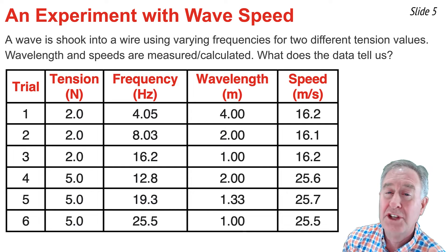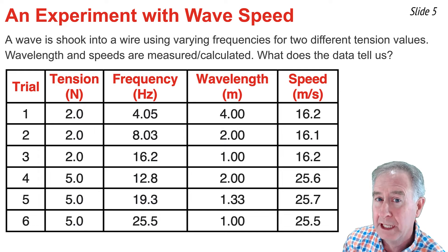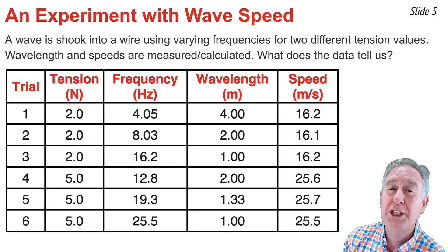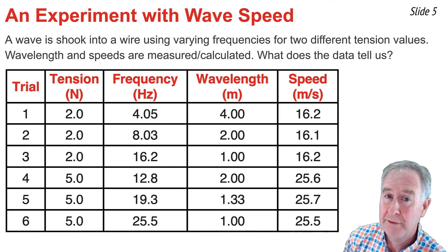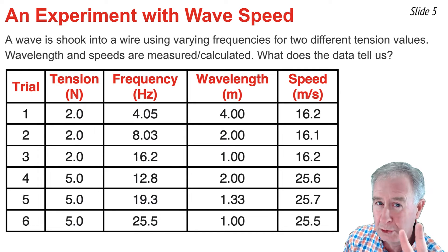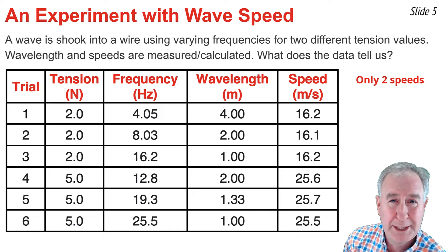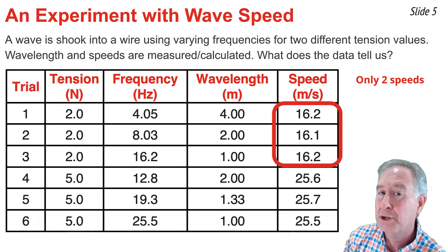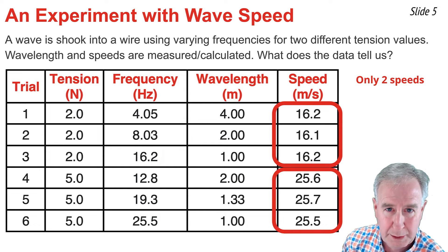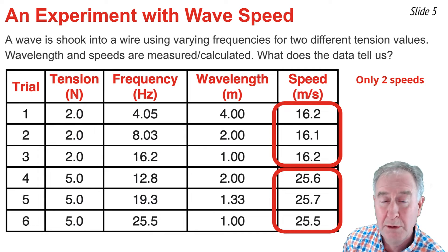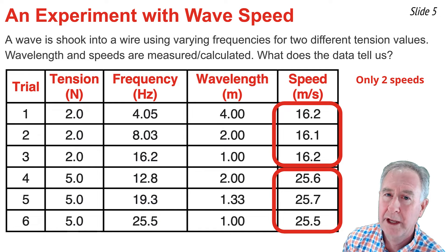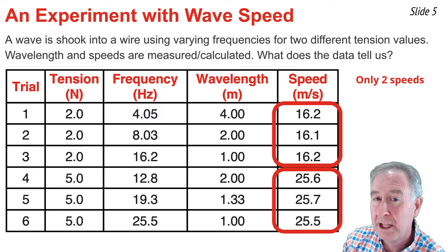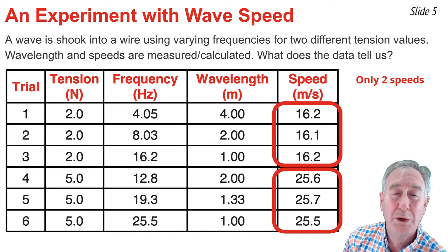So I want to call your attention to the last column that's labeled speed and see if you can answer the question, how many speed values do you see? Now some students will answer 5 and others will answer 6 speed values, but I want to try to convince you that there's just two speed values. There's the speed of about 16.1 meters per second and the speed of about 25.6 meters per second. There's the speed in the first three rows and there's the speed in the second three rows. And the variations of speed in rows 1, 2, and 3 are small and likely attributable to the fact that this is an experiment and we have measurement error. The same thing can be said about the fluctuations in speed in rows 4, 5, and 6.